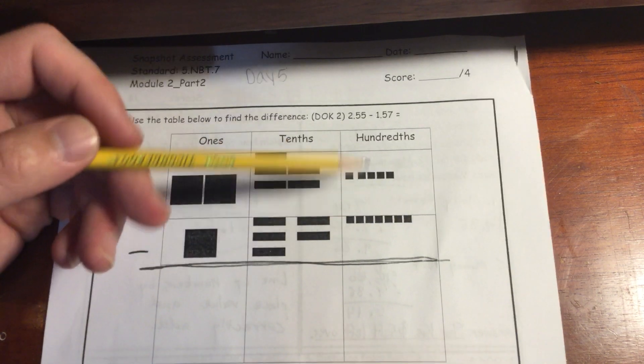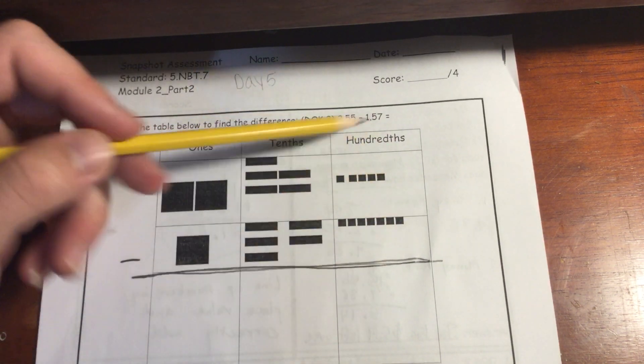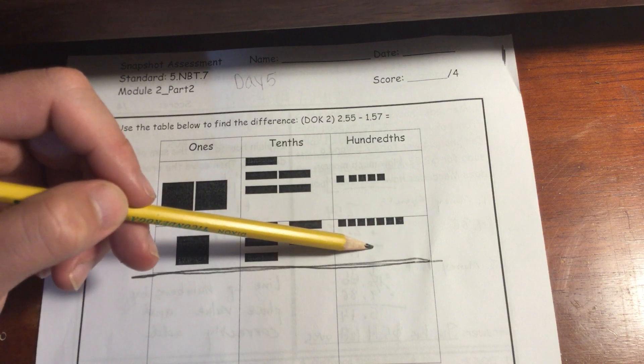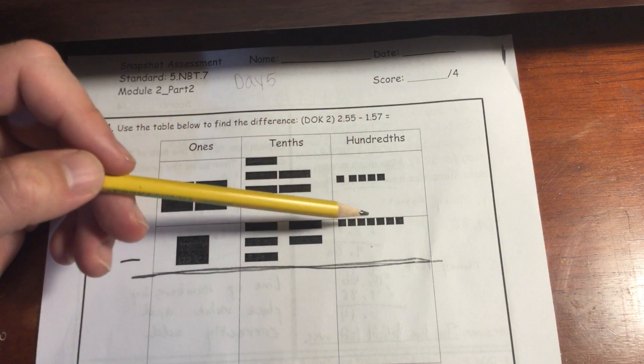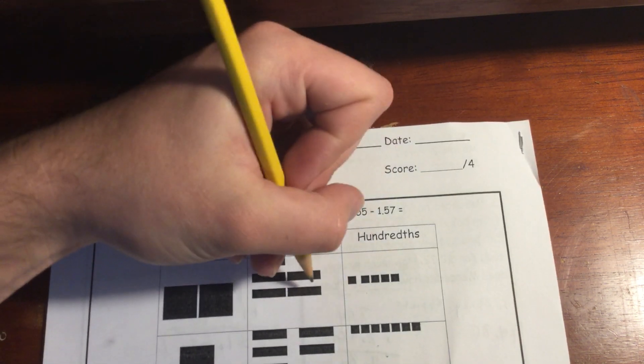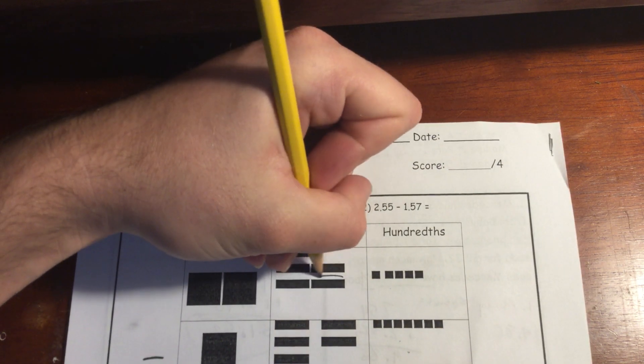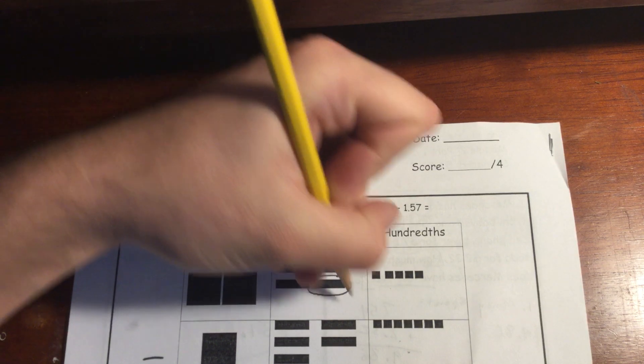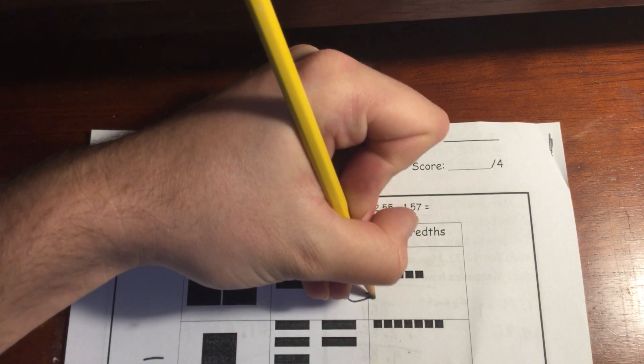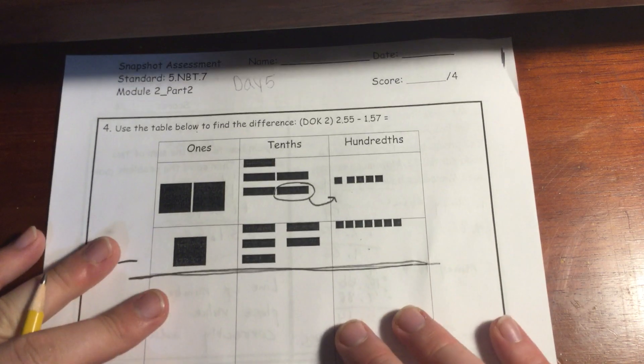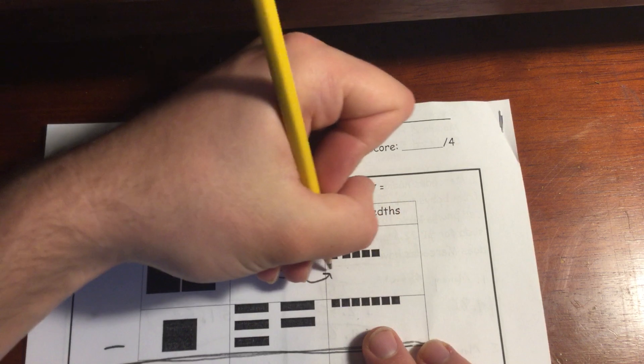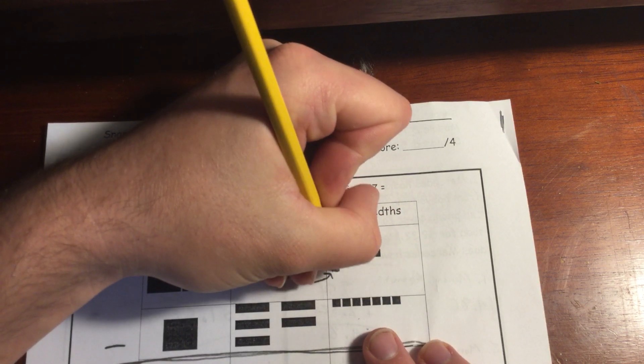So the first thing I'm looking at is I'm going to go over here to my hundredths and I see that I would need to take away 7 from 5. So I cannot take away 7 from this 5. So what I'm going to do is I'm going to circle one of these tenths and it is going to go one place value smaller over here to the hundredths. I'll be regrouping 10 of those now.